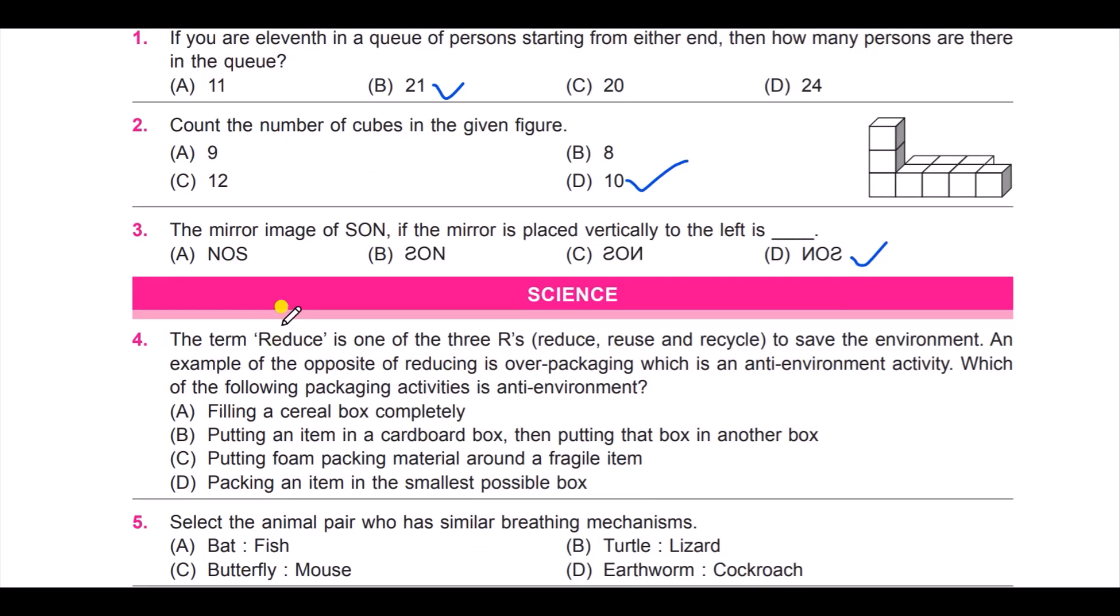Next question: the term reduce is one of the three R's—that is reduce, reuse, and recycle—to save the environment. An example of opposite of reducing is over-packaging, which is an anti-environment activity. Which of the following packaging activities is anti-environment? Look at the options: option A, filling a cereal box completely; B, putting an item in a cardboard box and then putting that box in another box; C, putting foam packaging material around a fragile item;